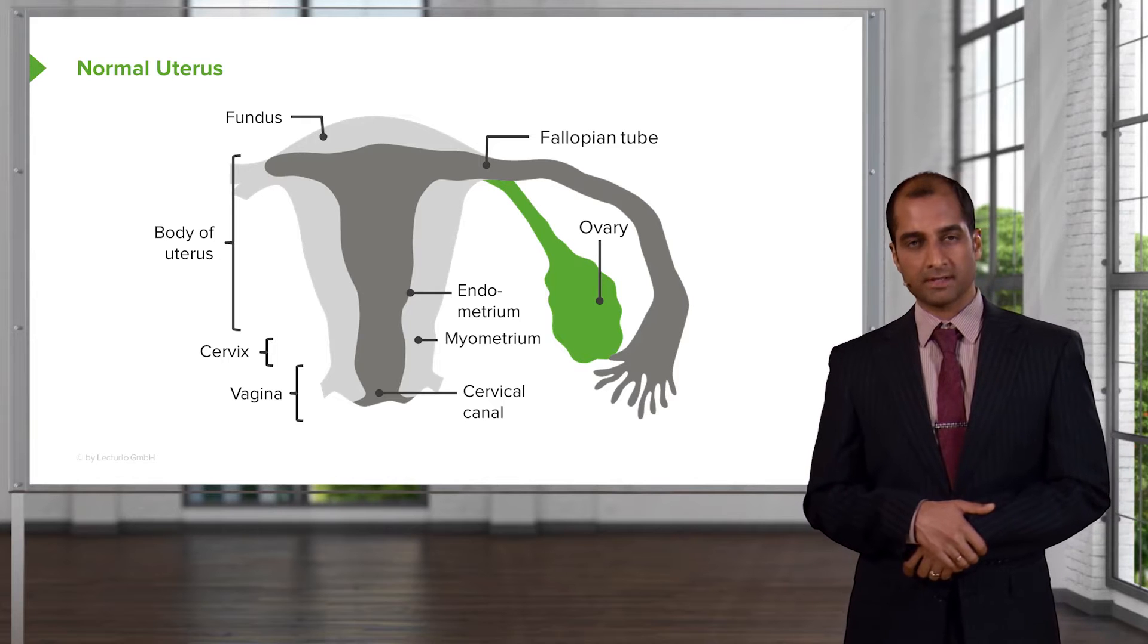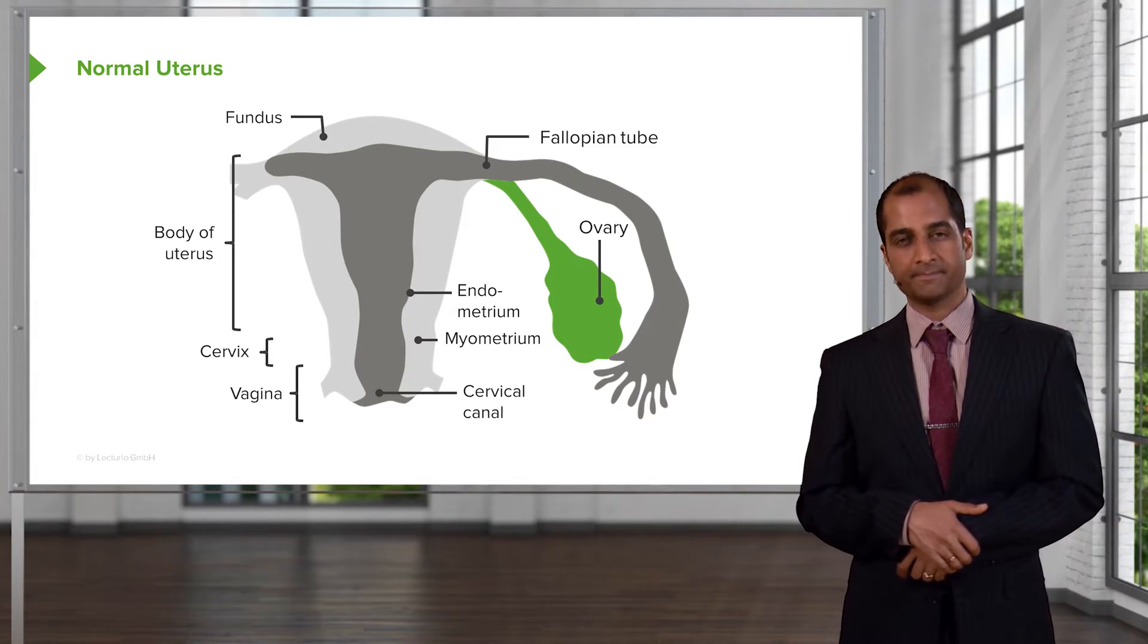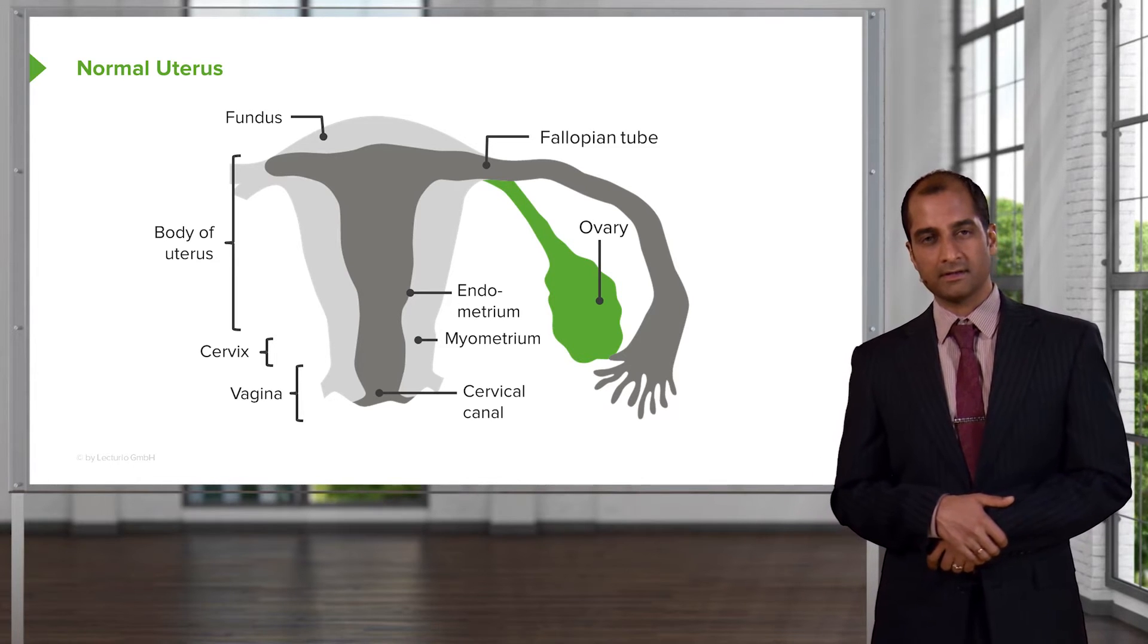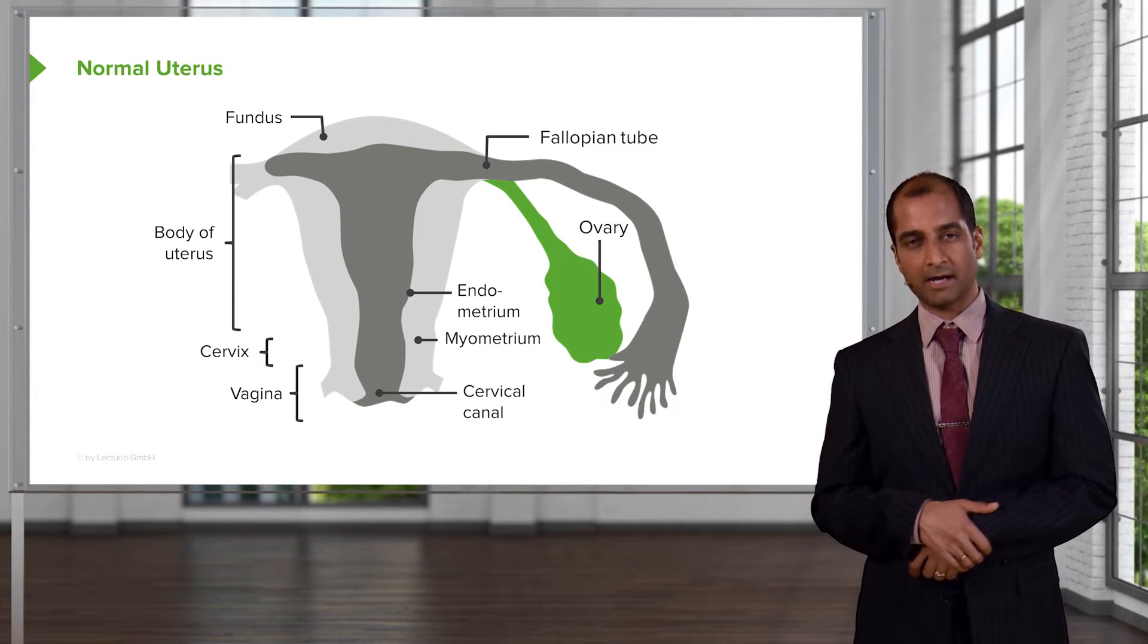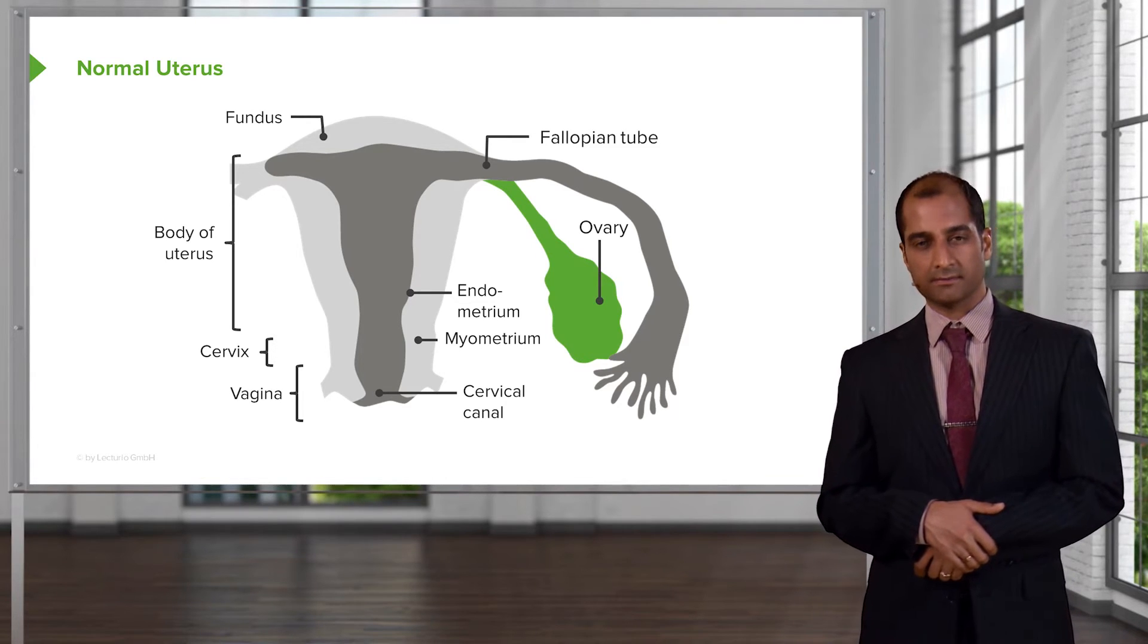From the vagina, we moved into the cervix. With the cervix, we talked about HPV being a major component of high strain leading into cervical intraepithelial neoplasia and eventually cervical cancer.